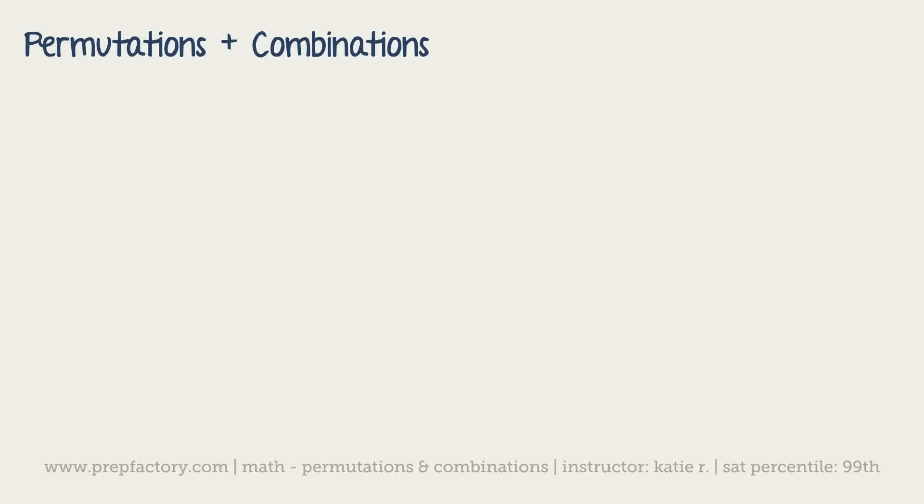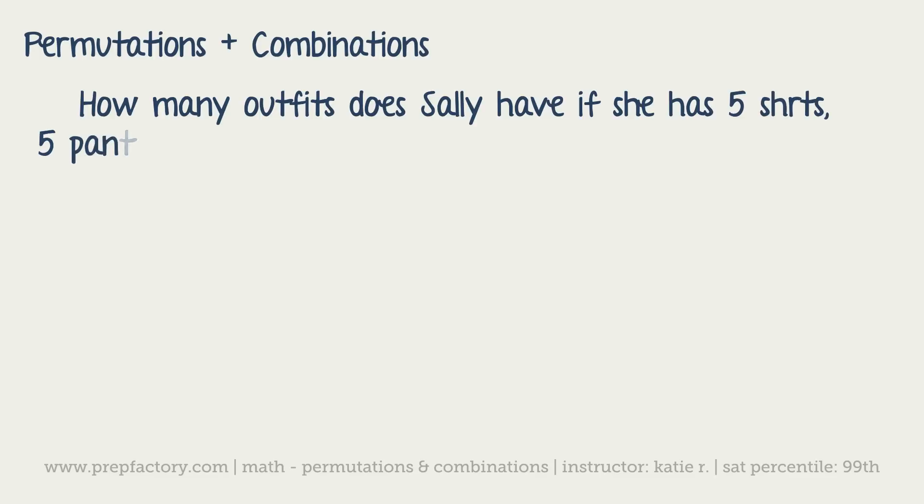Next up is when we have items from different groups. How many outfits does Sally have if she has five shirts, five pairs of pants, and two hats? We have to assume that an outfit consists of one pair of pants, one shirt, and one hat.